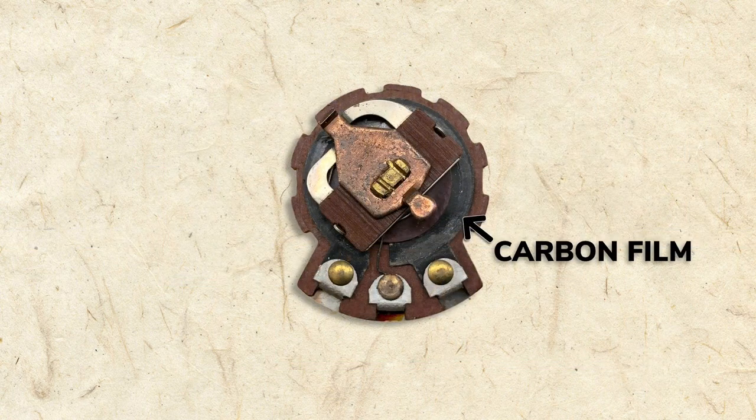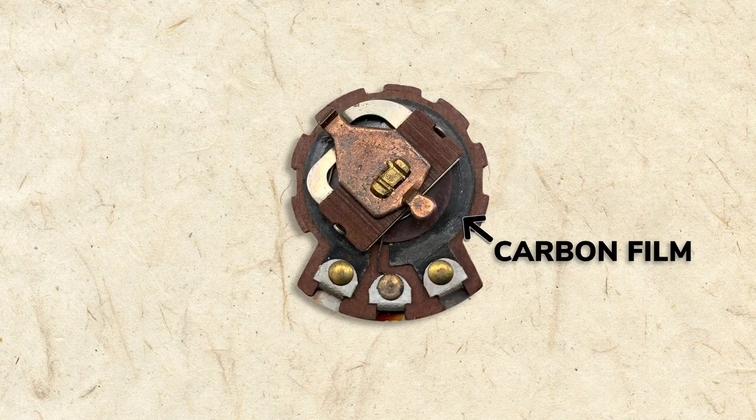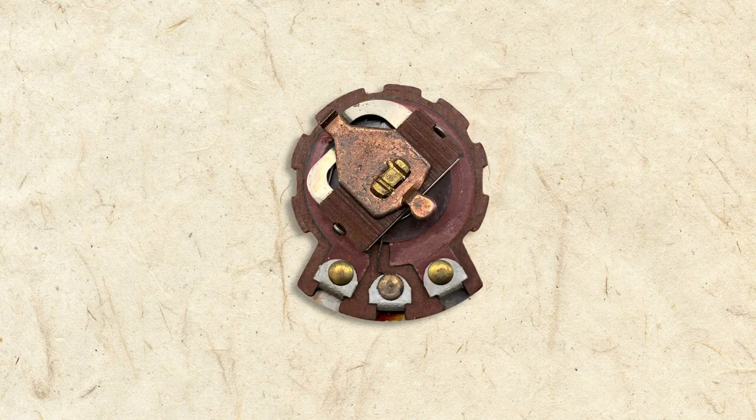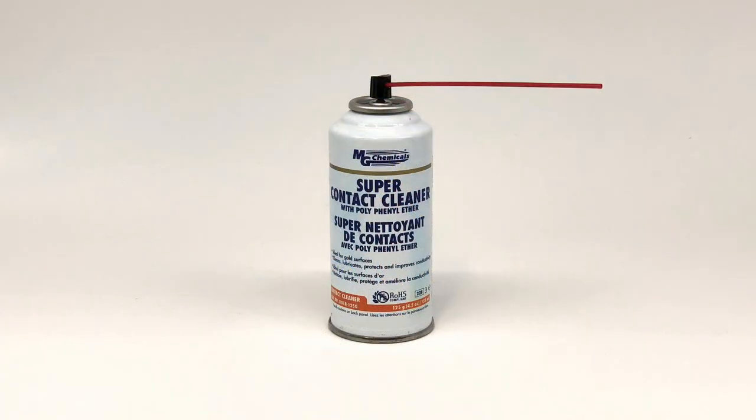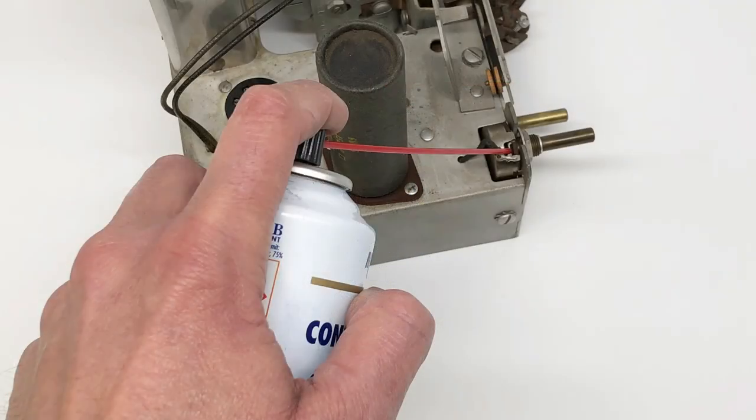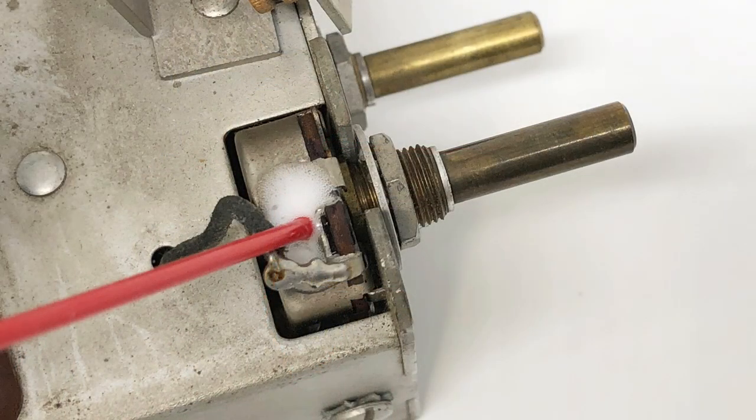Sometimes the resistive track on a potentiometer isn't a wire, but instead carbon film. Over time, the film and wiper can corrode, causing the volume and tone controls to sound scratchy when operated. Special cleaners are designed to remove this corrosion, and usually a squirt or two and a few turns of the knob remove scratchiness from potentiometers.